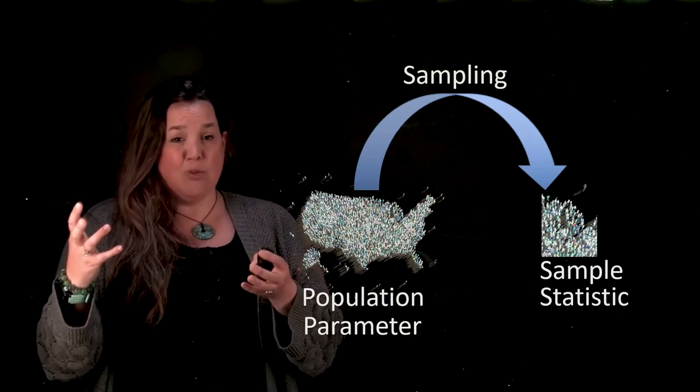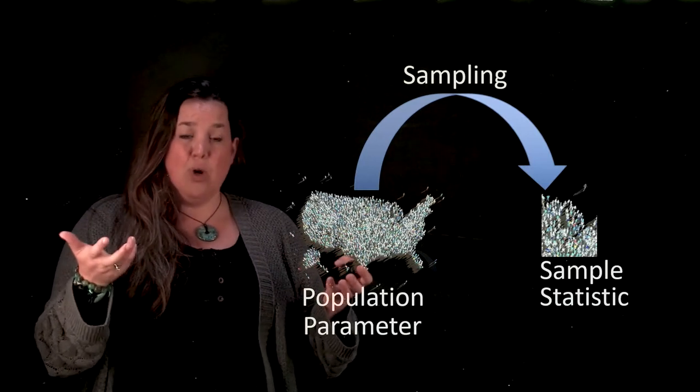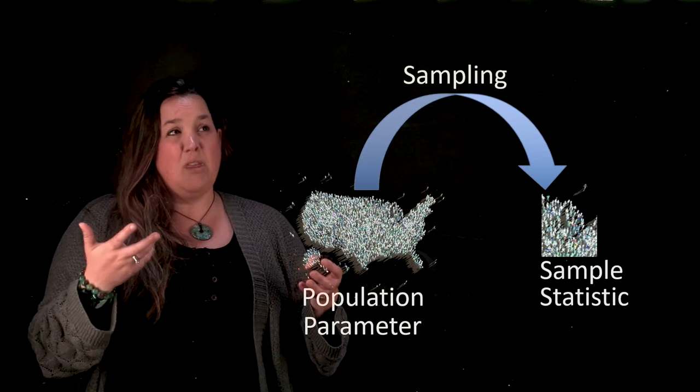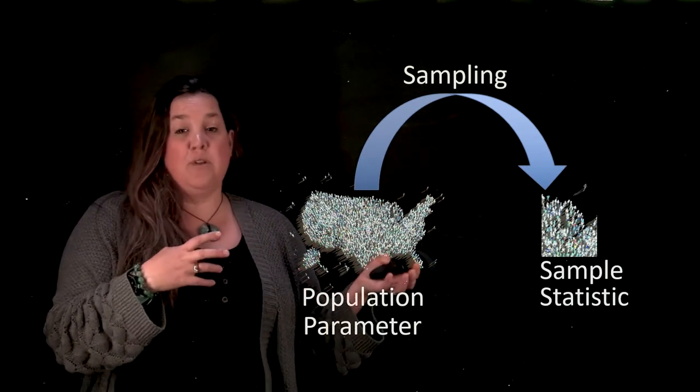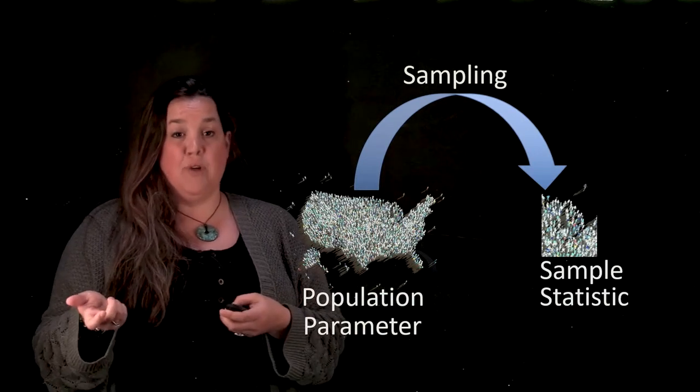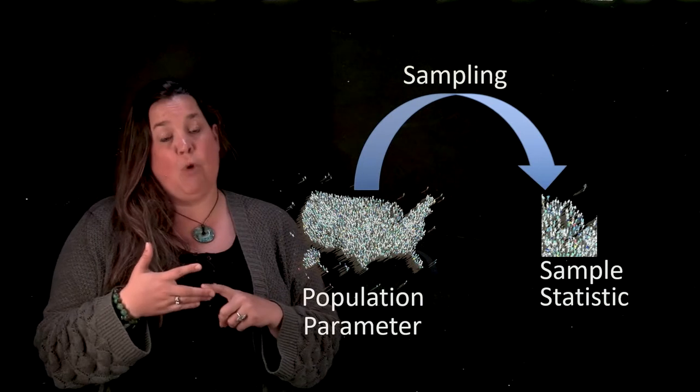Part of the reason that the U.S. census only happens every 10 years is because it's so expensive to do. And so as statisticians, we think that there's a possibility that you can take a smaller group of individuals to be able to talk about a larger group of individuals. It saves you time and it saves you money and it still is informative.